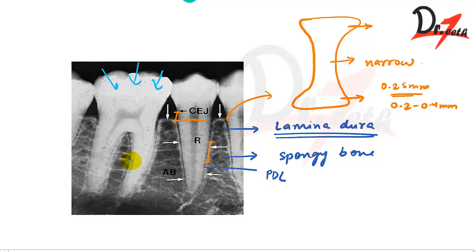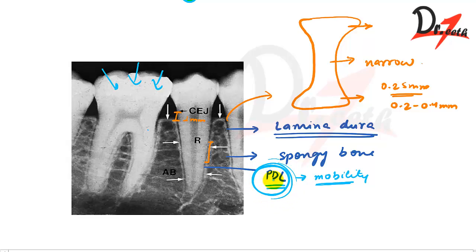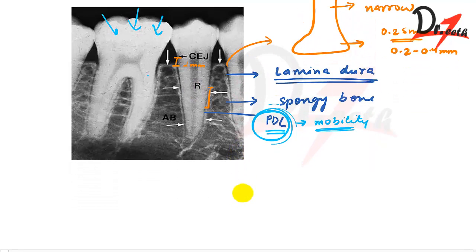The periodontal ligament is essential for tooth mobility. Normal mobility is largely determined by the width, height, and quality of the PDL. When affected by pathology, abnormal mobility results. The PDL space also distributes forces.